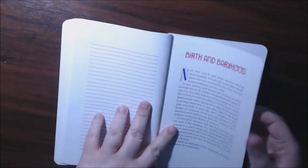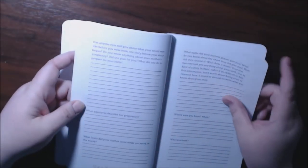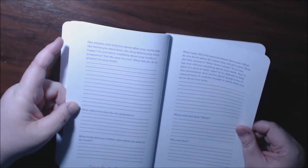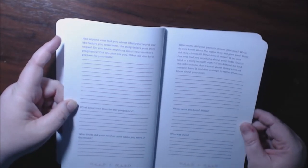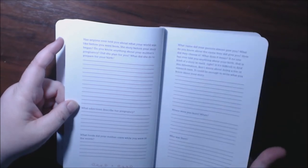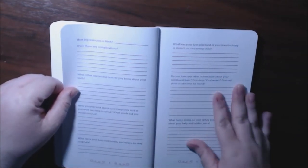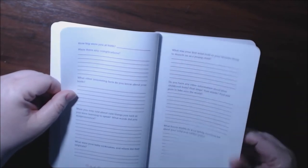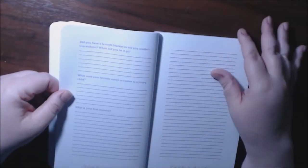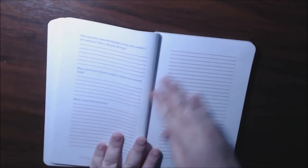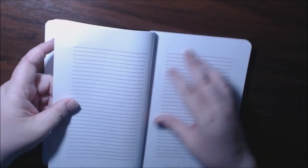This section's about birth and babyhood. What adjectives describe pregnancy? Wow. Where were you born? Who was there? What foods did your mother crave while you were in the womb? How big were you at birth? I mean, it goes back. What is your first memory? You know, this is so great.